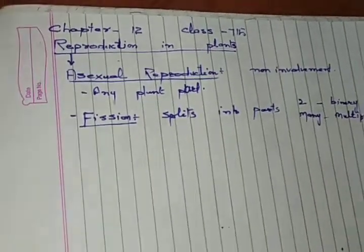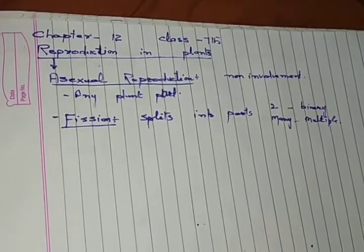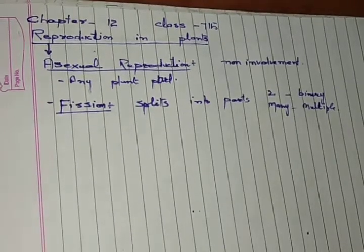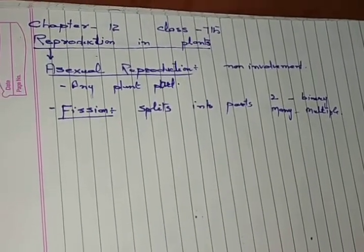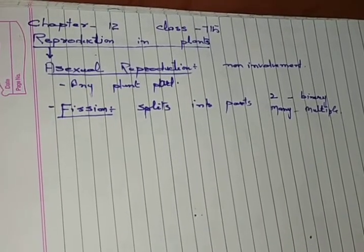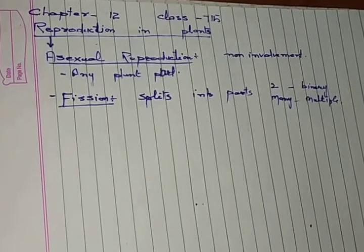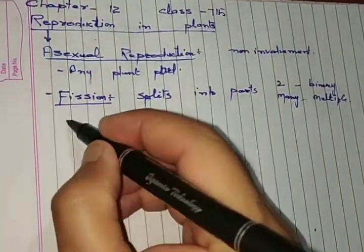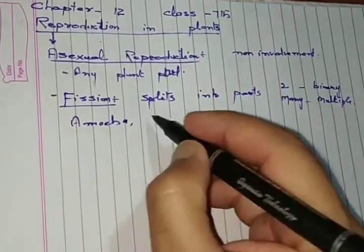In binary fission, there is a parent organism that splits into two parts. Each part gets reorganized into a new individual or new organism. This is usually seen in the case of amoeba or Leishmania.